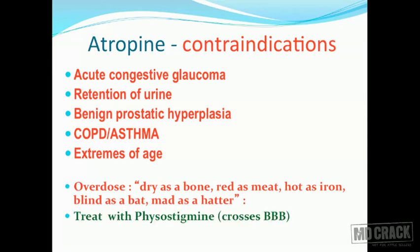To manage atropine poisoning, remember atropine is a muscarinic blocker and competitive antagonist of acetylcholine. You need to give something that acts like acetylcholine. The drug is physostigmine - not neostigmine, because neostigmine doesn't cross the blood-brain barrier, whereas physostigmine can. Both are anticholinesterase agents, but neostigmine has poor CNS penetration while physostigmine has better CNS penetration. Physostigmine inhibits cholinesterase enzyme, accumulates acetylcholine, and this displaces atropine from the blocked muscarinic receptor sites.